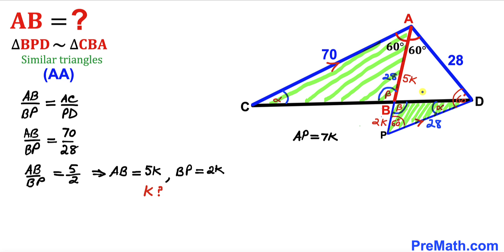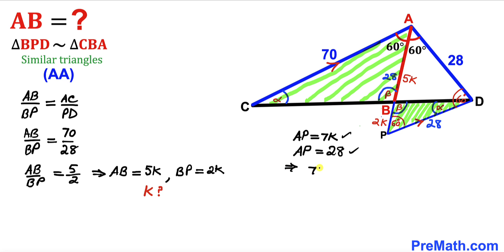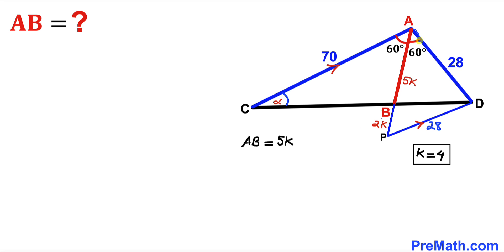Since we are dealing with equilateral triangle APD, the side AP equals 28. So we can write 7K equals 28. Dividing both sides by 7 to isolate K, our K value turns out to be 4. Since AB equals 5K, we substitute K equals 4 to get AB equals 5 times 4.